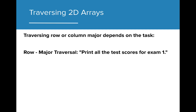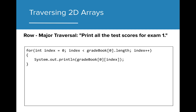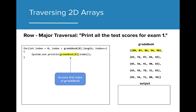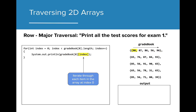Let's first look at Row Major traversal for the task of printing all test scores for a specific exam. Because we are only traversing an individual array in the 2D array, this traversal looks very similar to the 1D traversals we have been doing. The for loop is iterating from the value 0 to the last value of the array at position 0 in the 2D array. When we print out the values in this for loop, we only want to access gradebook[0], which is the first array in the gradebook, because we want to print all the values for the first exam for all students. We then iterate through the array by accessing the individual indices within the array at index 0 in the 2D array. Each time through, the loop will print one value across the array until the first array has printed.